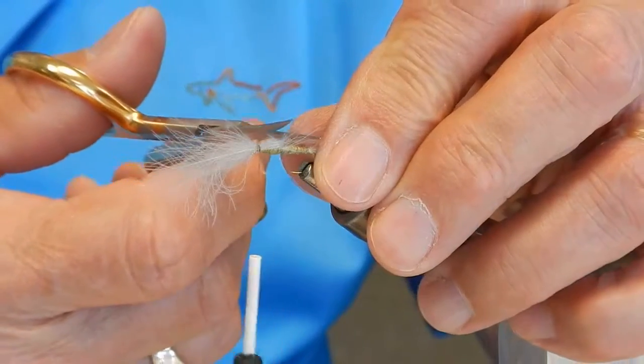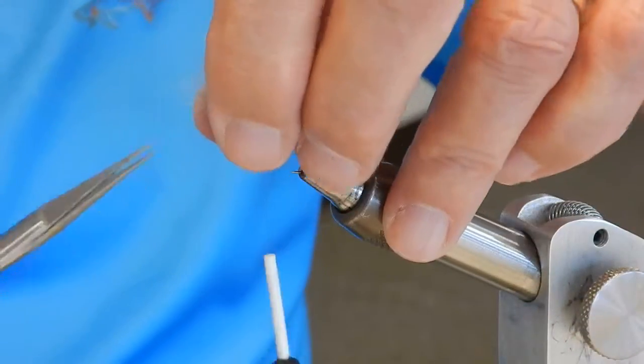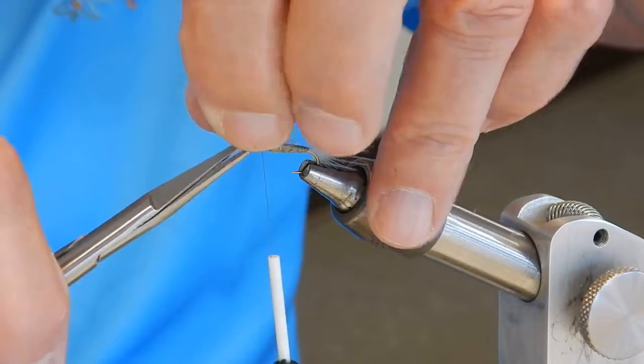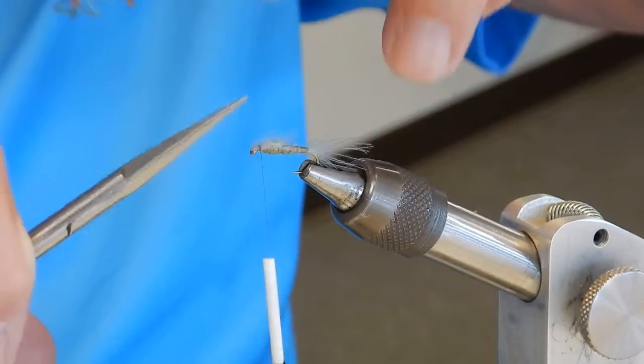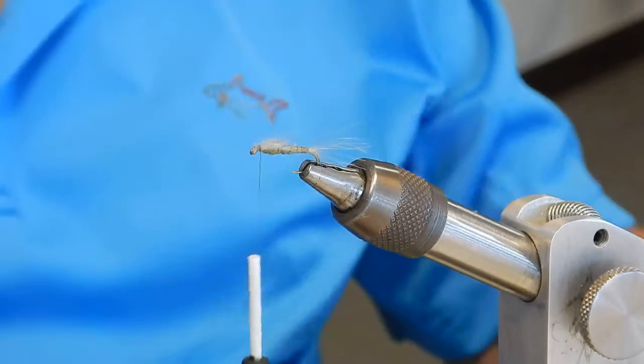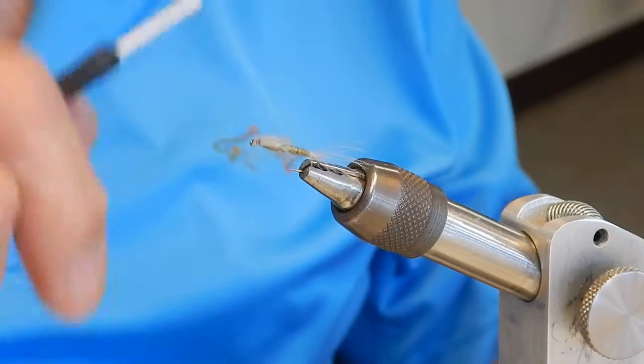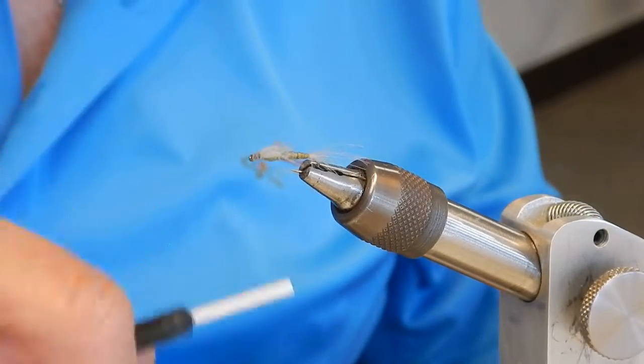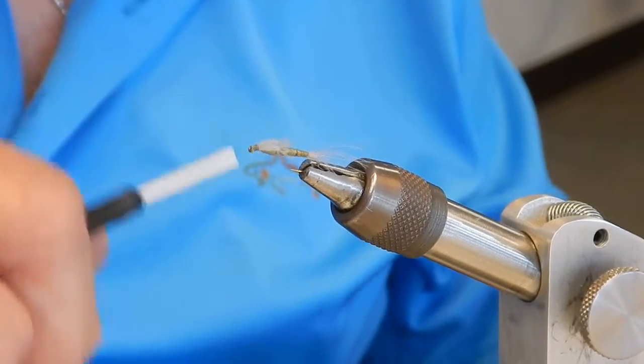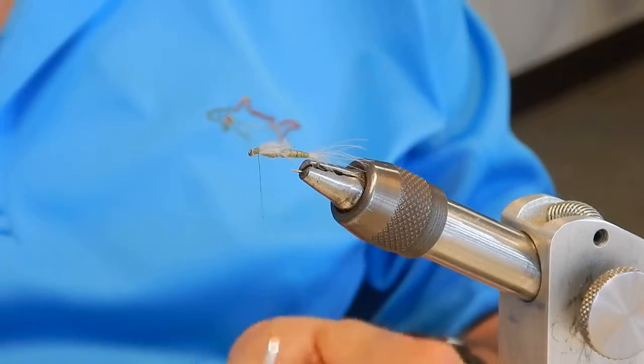As usual, you have some fluffy stuff you don't want. And then pull up, snip it close. Tie down. There you go.